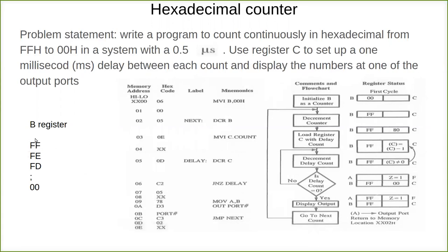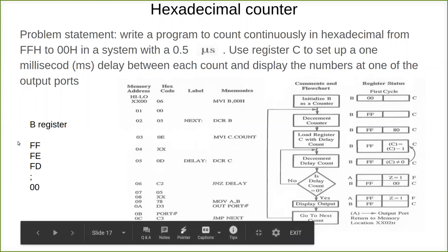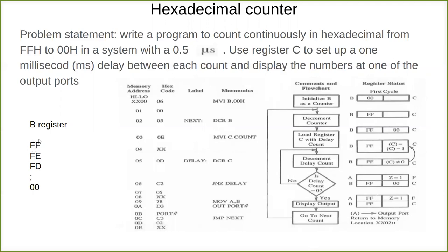When it counts, the output should remain visible for at least a few seconds. Otherwise it will move very fast and you won't be able to identify whether it is F or E or D or C, etc. So in order for the output to be stable, we have to introduce a time delay between one output and another. We are going to introduce a one millisecond delay, using register C.